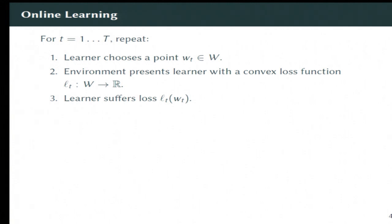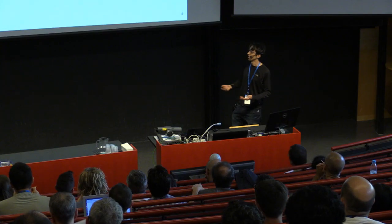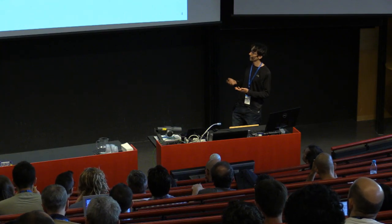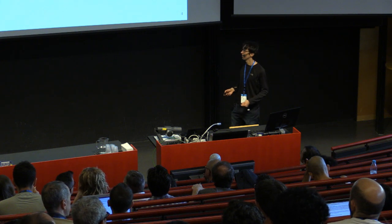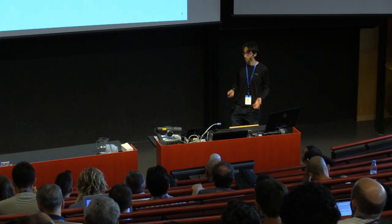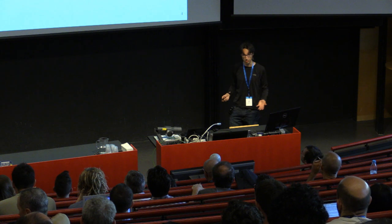This is, in particular, online convex optimization. So we're going to play a game of T rounds. In each round, the learner is going to pick a point W_T in some convex space W. Then we're going to see a convex loss function L_T, and we suffer some loss L_T(W_T).